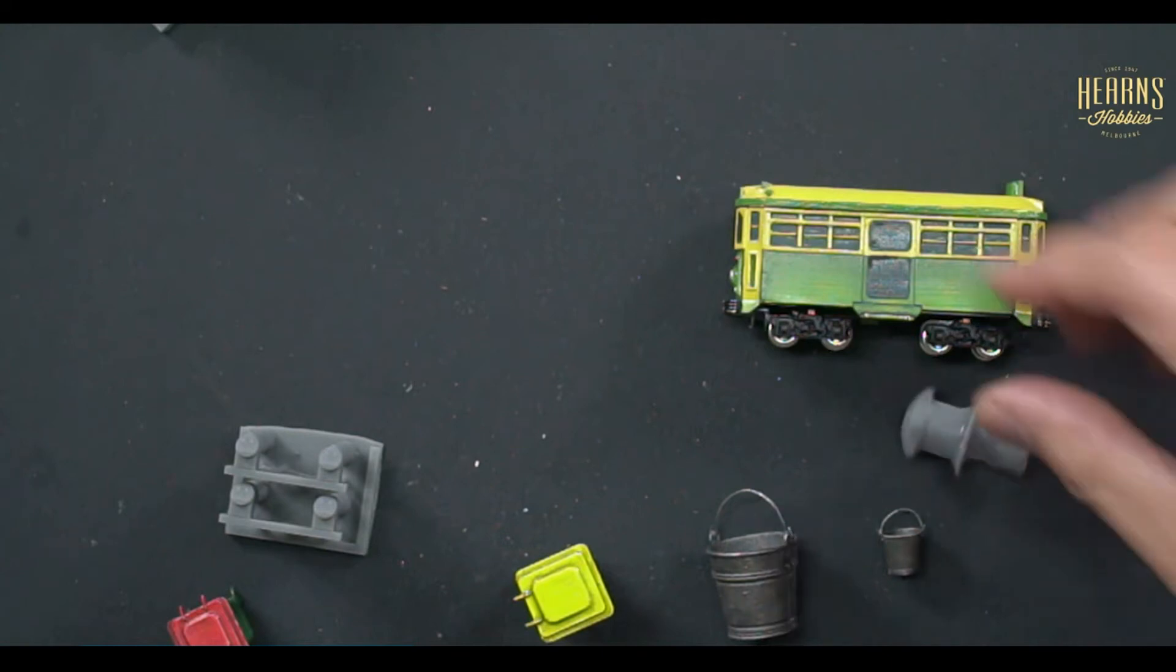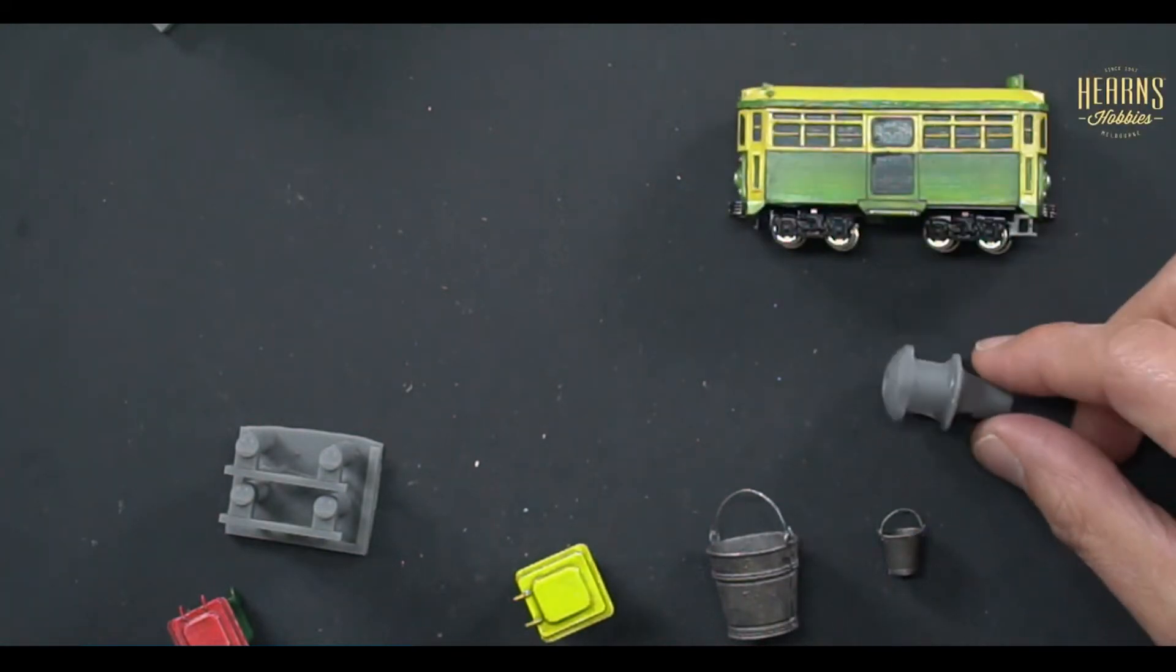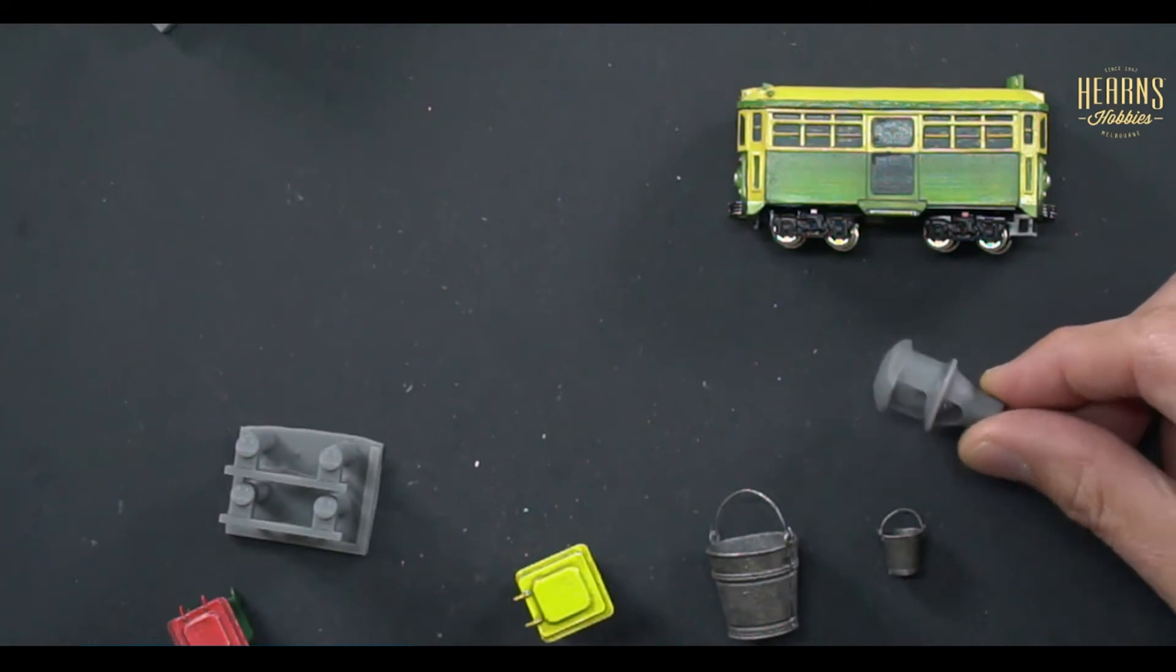We've got the 16th scale bucket, a 35th scale bucket. There's an example of the muzzle brake which is for the 16th scale German tanks, the 7.5 centimeter gun.